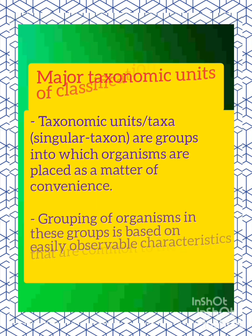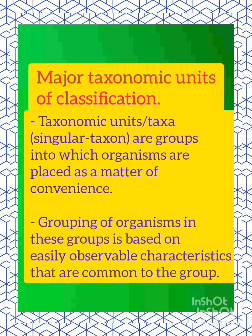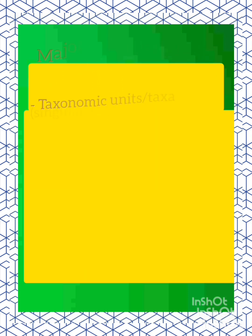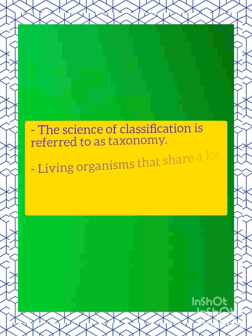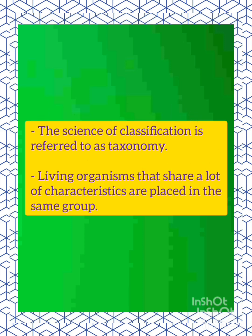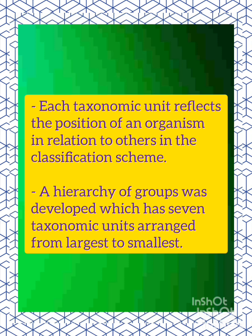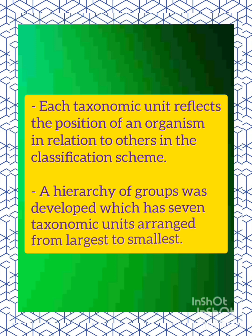Major taxonomic units of classification: taxonomic units are groups into which organisms are placed as a matter of convenience. Grouping of organisms is based on easily observable characteristics common to that group. The science of classification is referred to as taxonomy. Each taxonomic unit reflects the position of an organism in relation to others in the classification scheme. A hierarchy of seven taxonomic units was developed, arranged from largest to smallest.